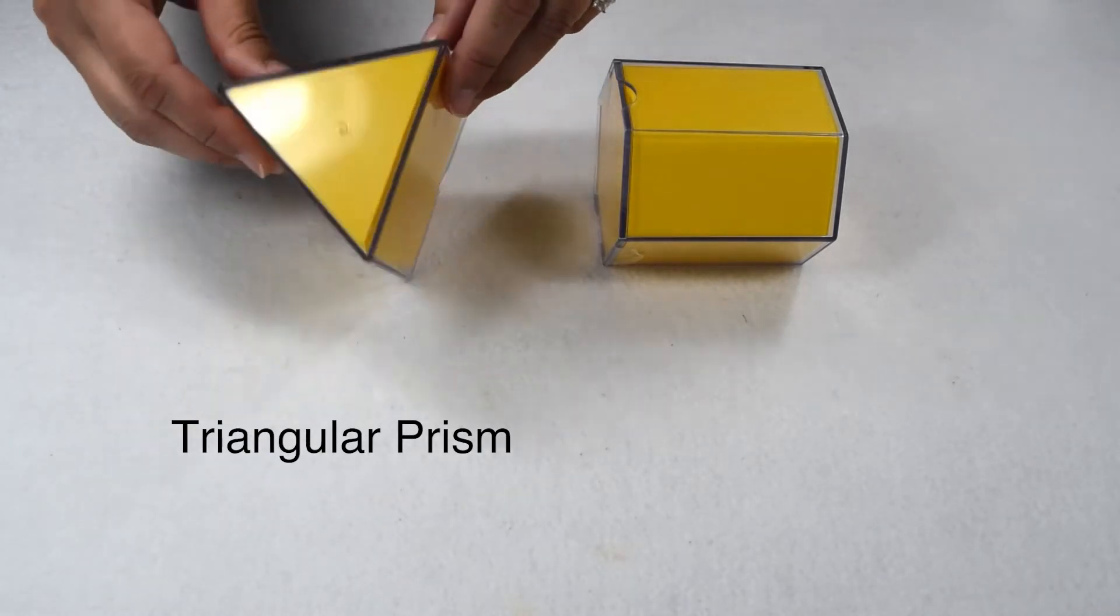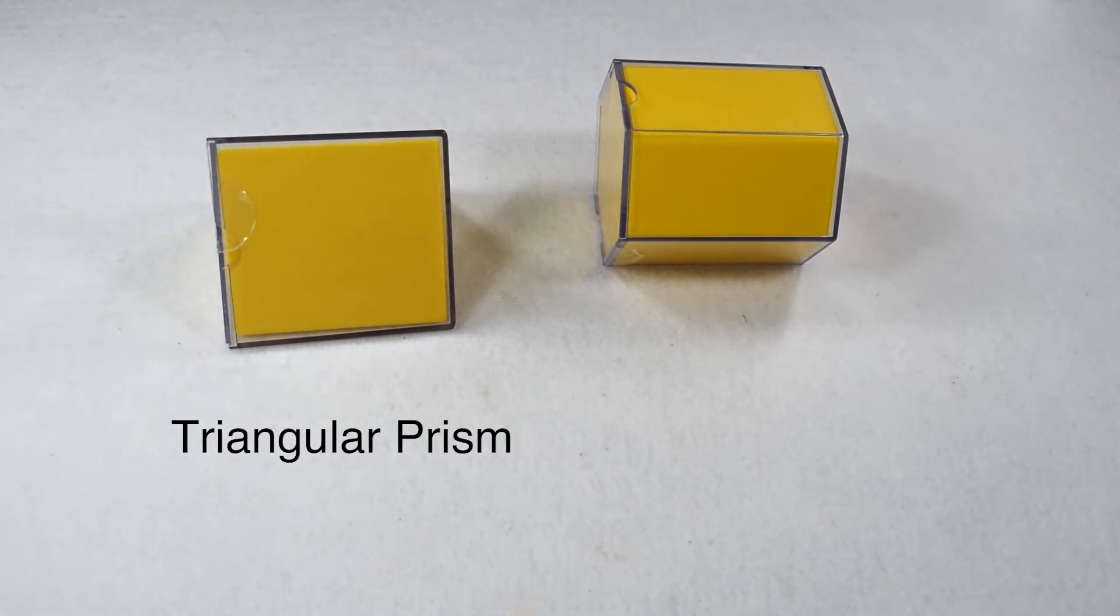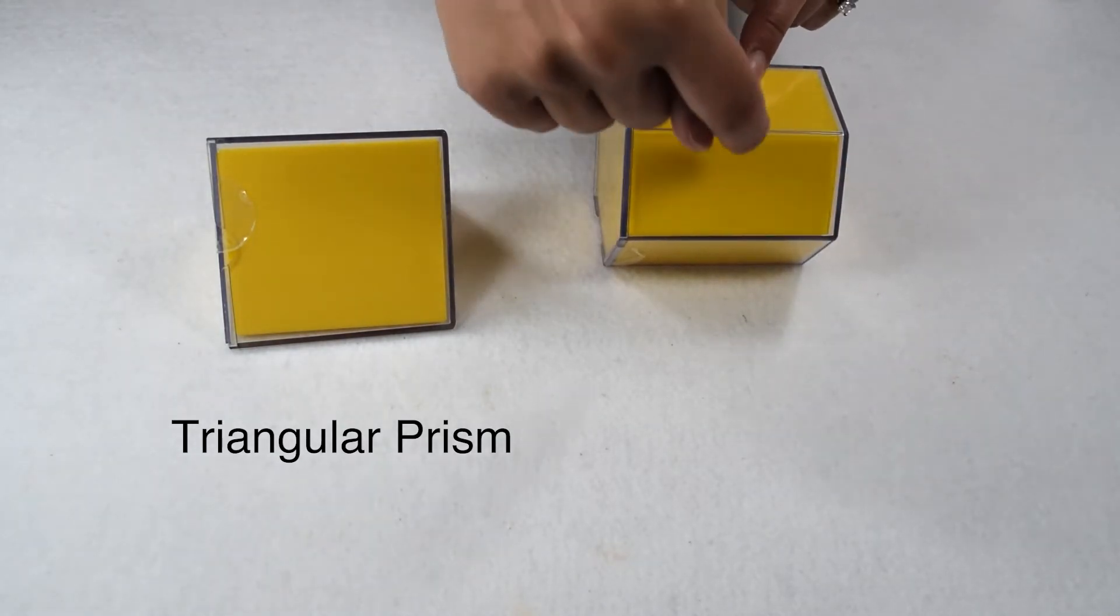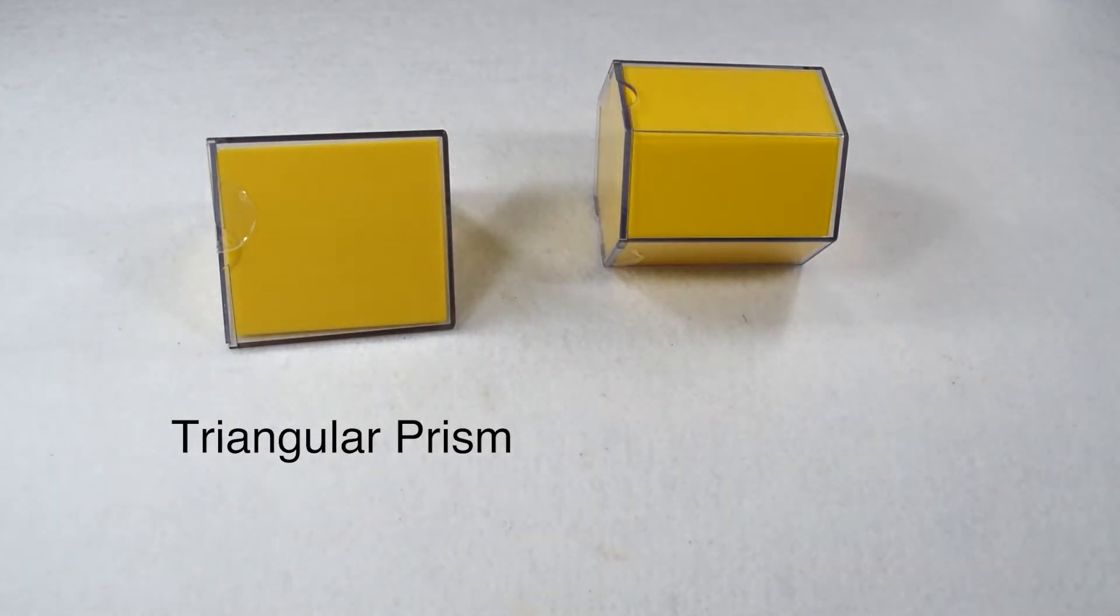No matter which way we rotate it, our triangles are still going to be considered our bases. Here, we have two hexagons that are parallel to each other connected by six rectangular lateral faces. That tells us that this figure is a hexagonal prism.